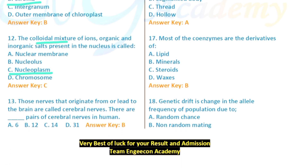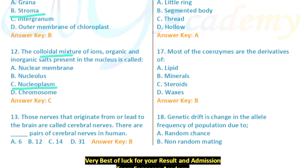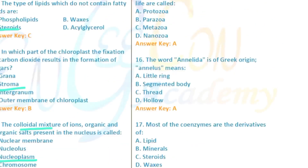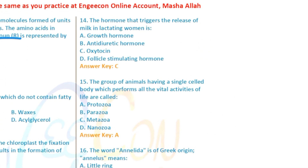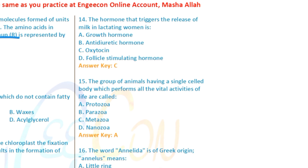Question: Nerves that originate from or lead to the brain are called cranial nerves. The brain's nerves — those that originate from the brain — are called cranial nerves, and this option is ticked.